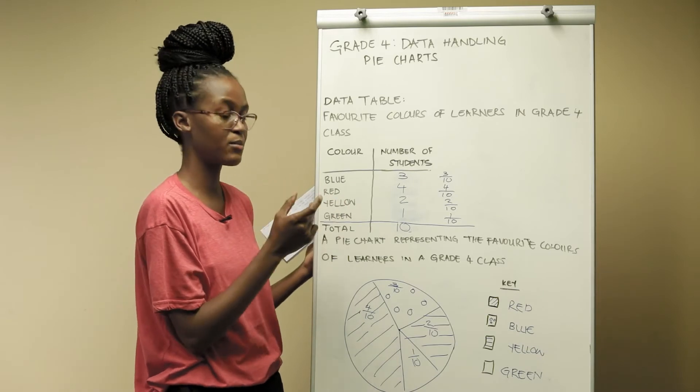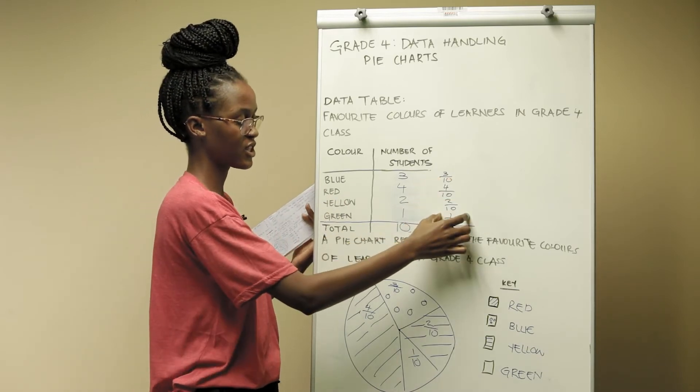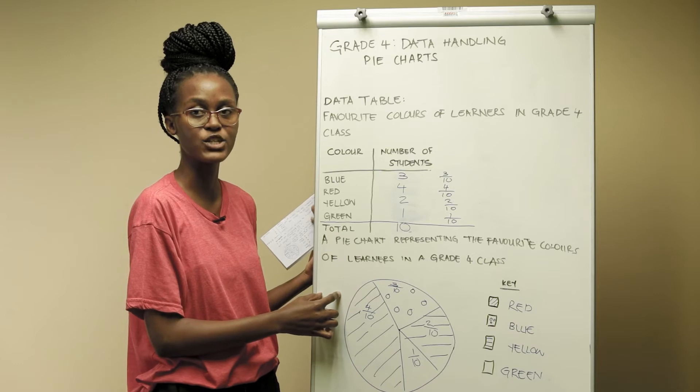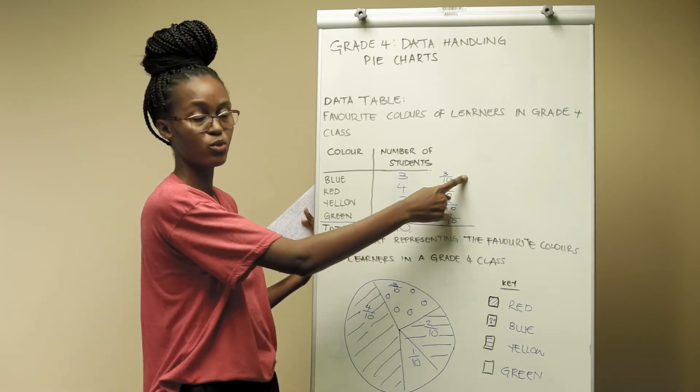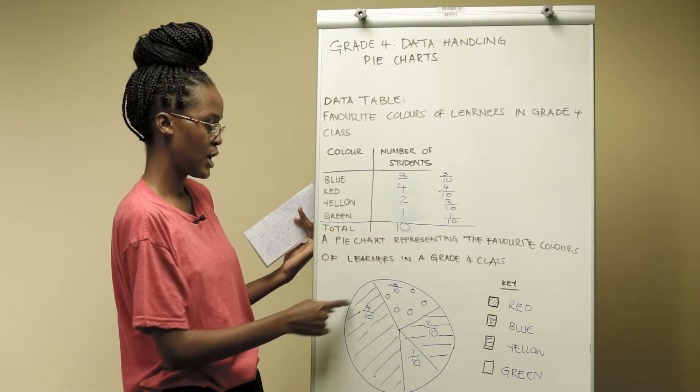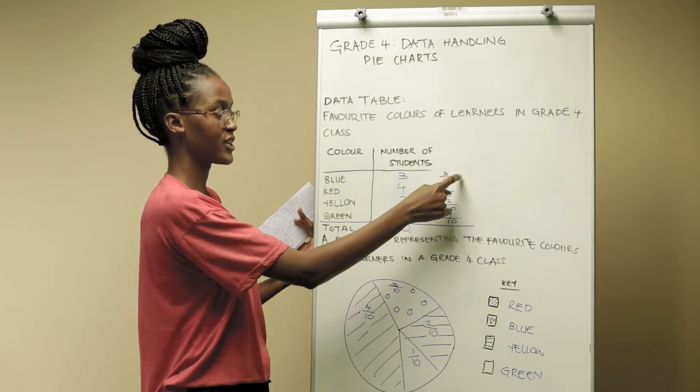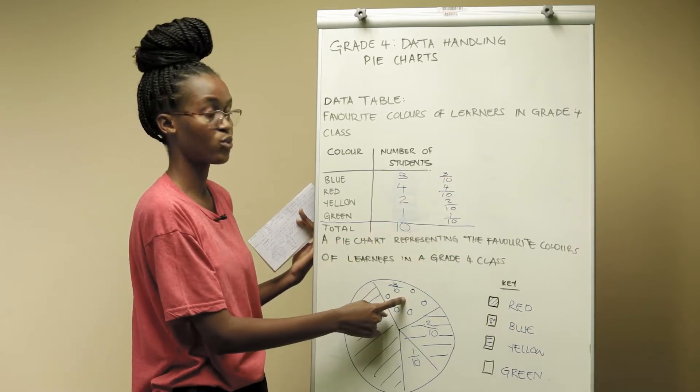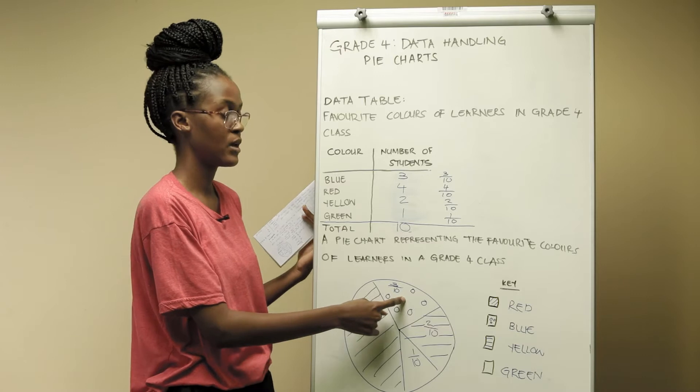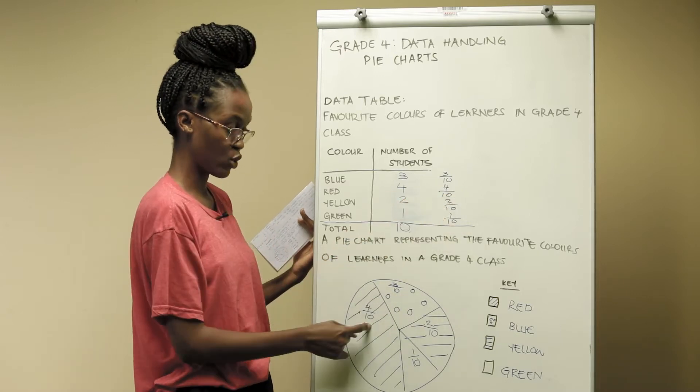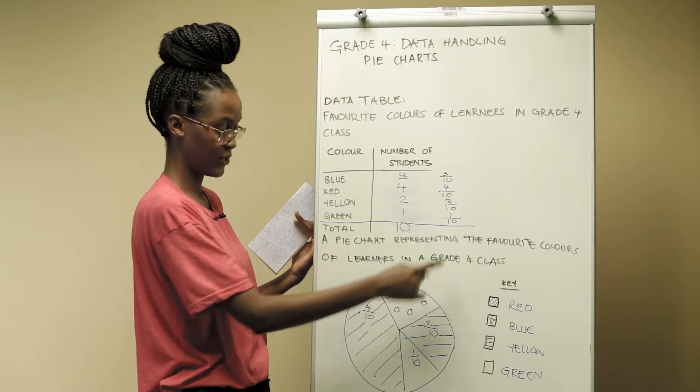What the learners should then be able to do is relay this information into a pie chart. For example again we'll use blue. Blue we have 3 tenths and that's what we have indicated here and the same goes for the other three colours.